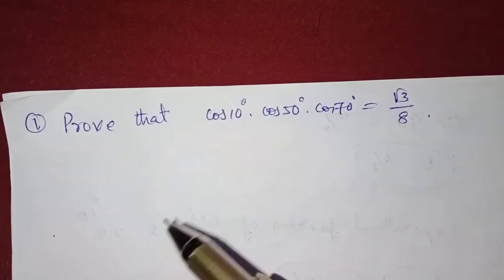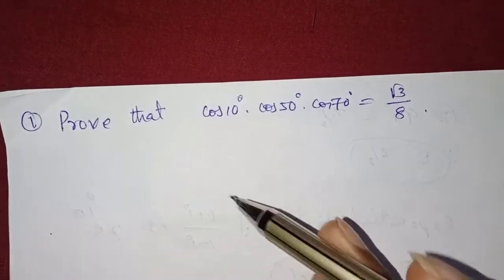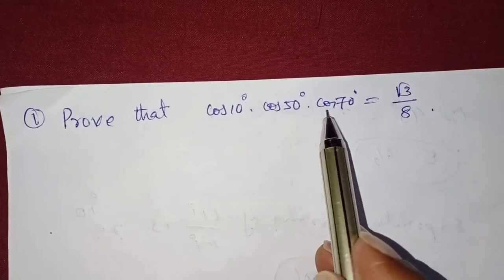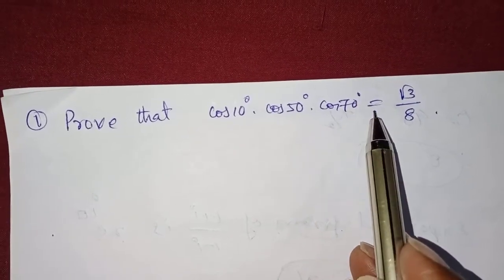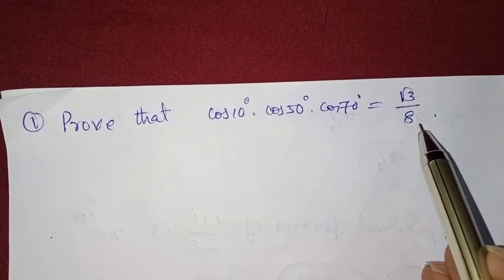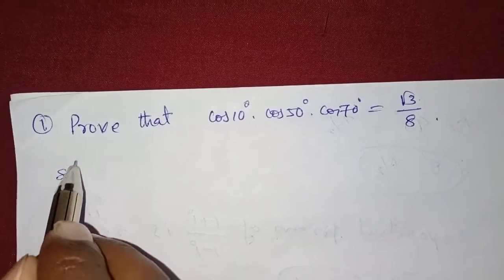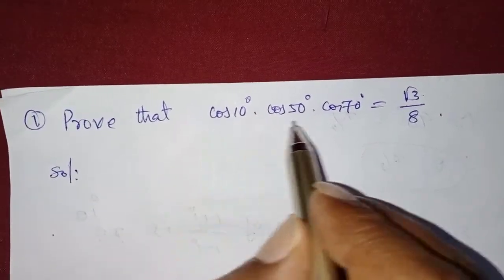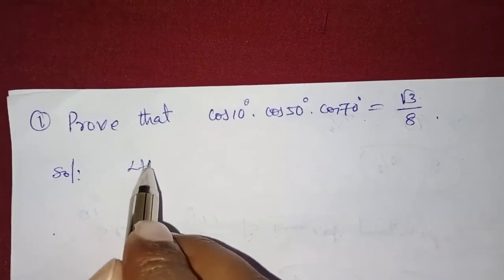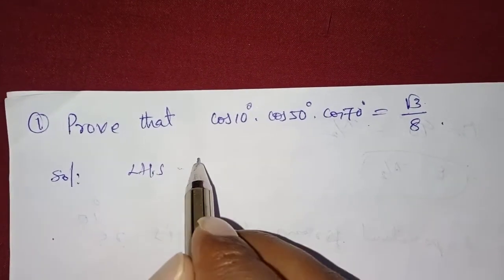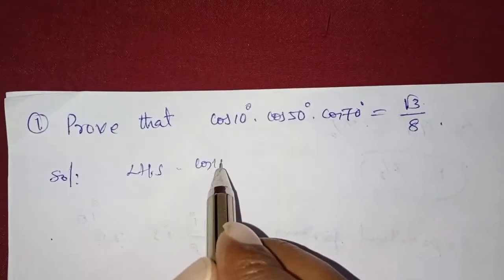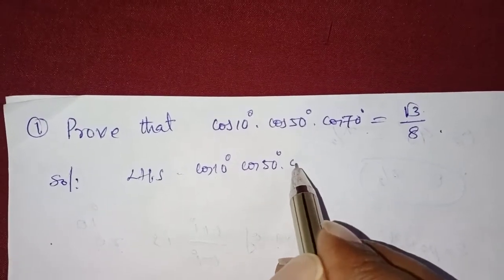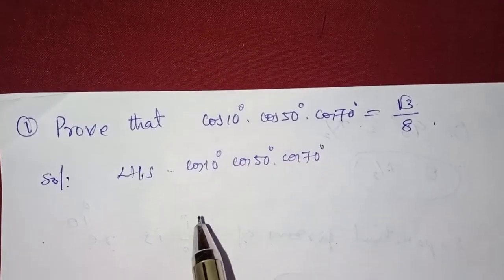Prove that cos 10 degrees into cos 50 degrees into cos 70 degrees is equal to root 3 by 8. In this type of questions, first consider only the LHS value, that is cos 10 degrees into cos 50 degrees into cos 70 degrees.